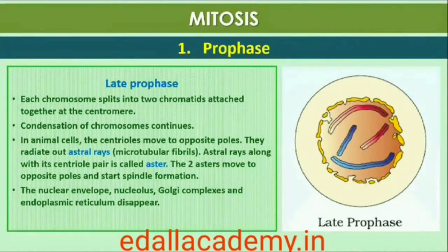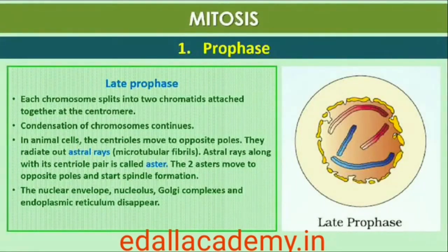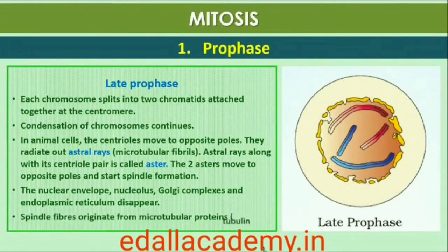The completion of prophase is marked by the following characteristic events: chromosomal material condenses to form compact mitotic chromosomes, which are seen to be composed of two chromatids attached together at the centromere. There is also initiation of the assembly of the mitotic spindle; the microtubules and proteinaceous components of the cell cytoplasm help in the process. Cells at the end of prophase, when viewed under the microscope, do not show Golgi complexes, endoplasmic reticulum, nucleolus, or the nuclear envelope.